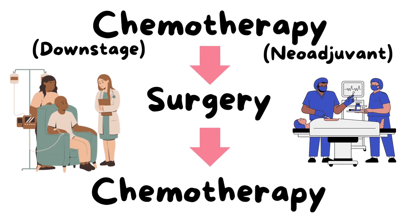The management principle is to try the best to salvage the limb. Initially, chemotherapy is given before surgery, following which the tumor shrinks in size — this is called downstaging the tumor. This pre-operative chemotherapy is called neoadjuvant chemotherapy. Then surgery is done, after which the remaining cycles of chemotherapy are given to complete the treatment.